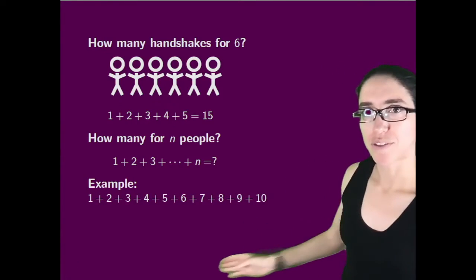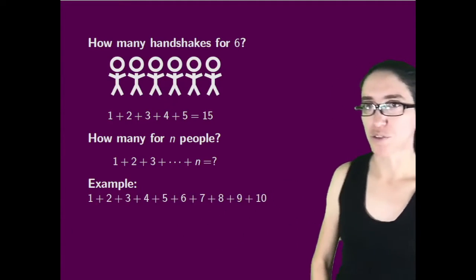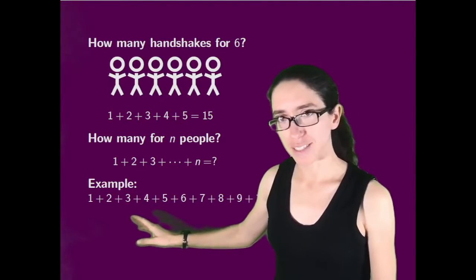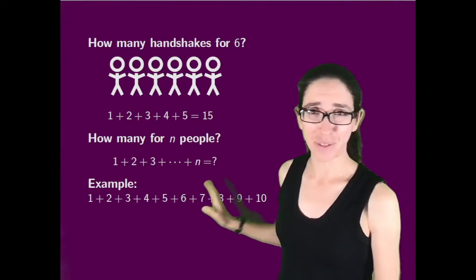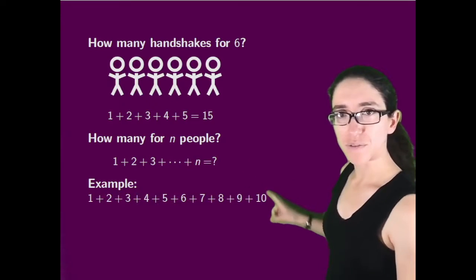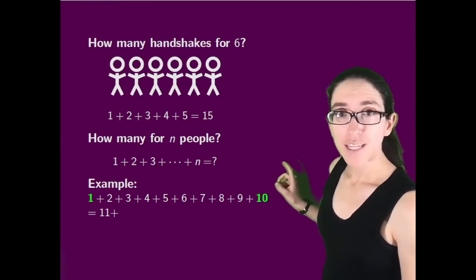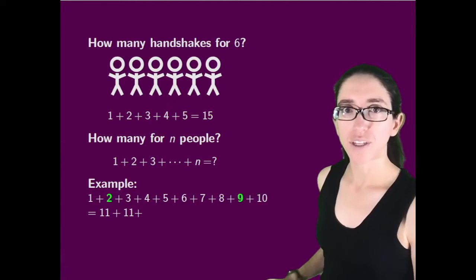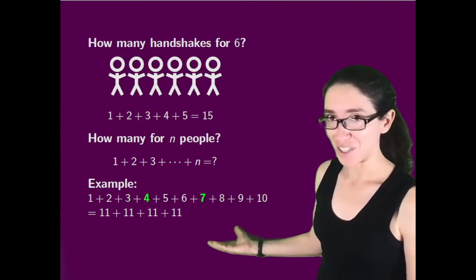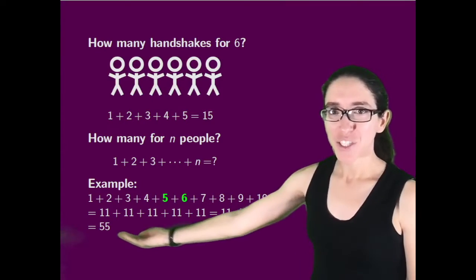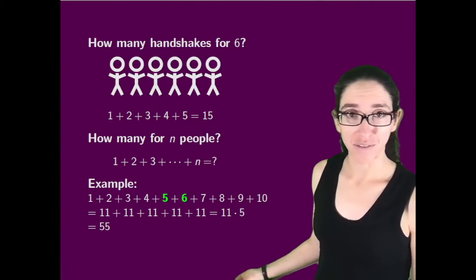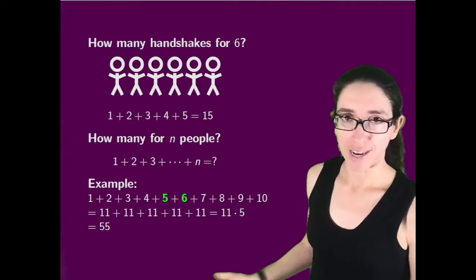Here's a bigger example. Let's add all the numbers from one up to ten. To do it faster, we can add the one and the ten first, which forms eleven. Add the two and the nine, that's also eleven. Three and eight is also eleven. Four and seven, also eleven. And finally, five and six is also eleven. So we have five elevens, which we can calculate as eleven times five, which is fifty-five. This gives us an easier way of adding up the numbers from one to ten.